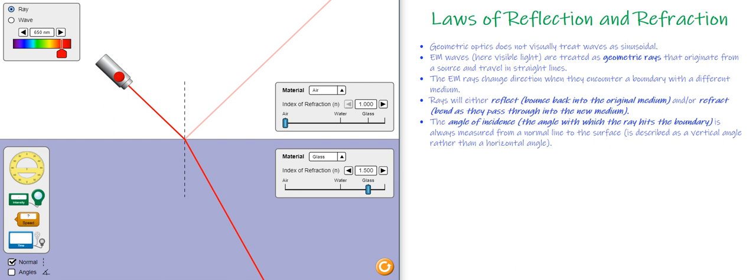The electromagnetic rays does not have to be visible light. This could be a microwave generator rather than a laser and we should still see basically the same relationships. The electromagnetic rays change direction when they encounter a boundary, and this is the boundary between two different substances here, air and glass.